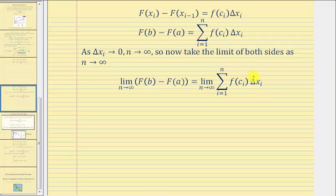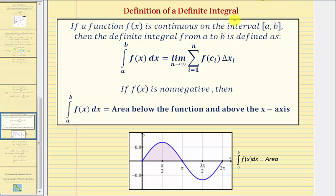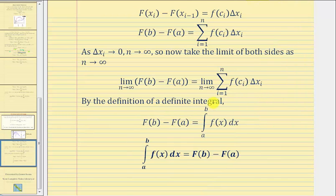And now looking on the right, we should recognize this limit — this limit is the definition of a definite integral. So for a quick review, the definition of a definite integral is given here. Notice how this limit on the right is the same limit we have in our proof. And therefore, by definition of a definite integral, we have big F of b minus big F of a equals the definite integral of f of x with respect to x from a to b, and we have our proof.